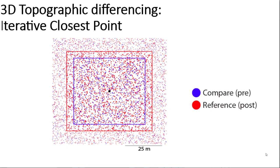Now I will discuss how the 3D differencing is performed. The first step is to window the point cloud data. In this figure, the blue is the compare or pre-event data, and the red is the reference or post-event data. The first step is to window both of these datasets, as shown by the bolded data. This black point is called the core point; it's at the center of the boxes or windows, and it's used typically as the reference for the measured displacement.